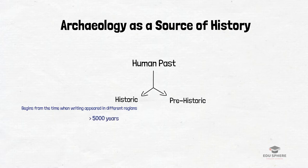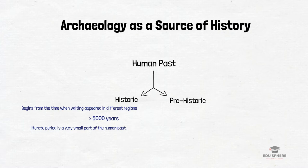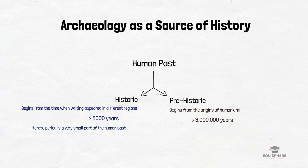Later on, as writing evolved, it was used in a variety of ways, such as for maintaining records and in different literary writings. However, the literary period is a very small part of human past, which helps us to investigate only the last few thousands of years. On the other hand, prehistory begins from the origins of humankind, that is over 3 million years ago.